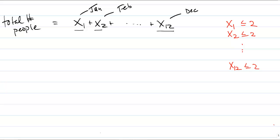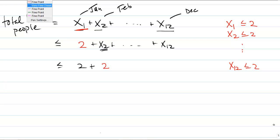The first substitution we make is to take the variable x1 and substitute 2 for x1 in the expression. Because 2 is at least as large as x1, the resulting sum after the substitution is at least as large as the sum before, since we're substituting something greater than or equal to the variable. Then we do the substitution again, replacing x2 with 2. We keep repeating this process, and in each substitution we replace one more variable with the upper bound of 2.